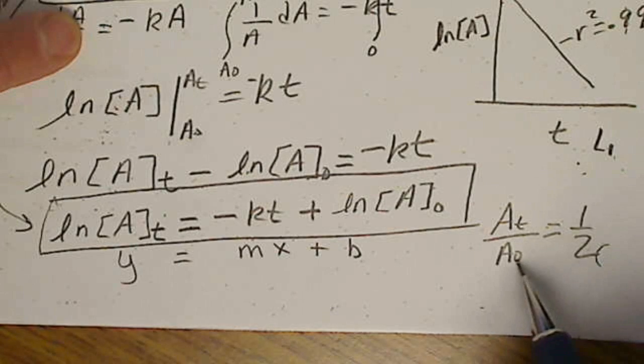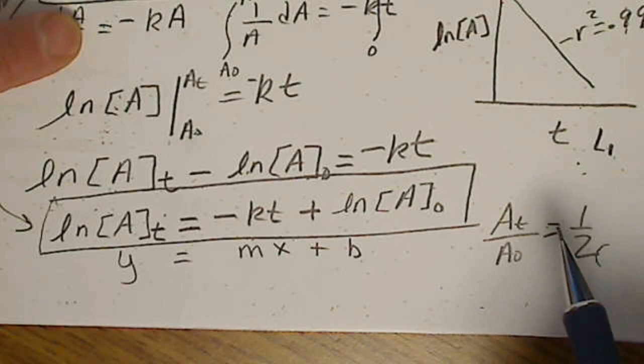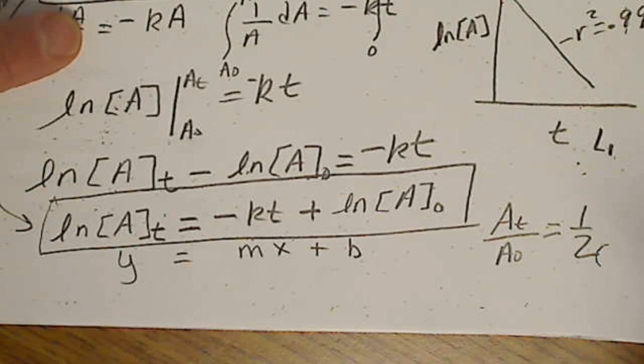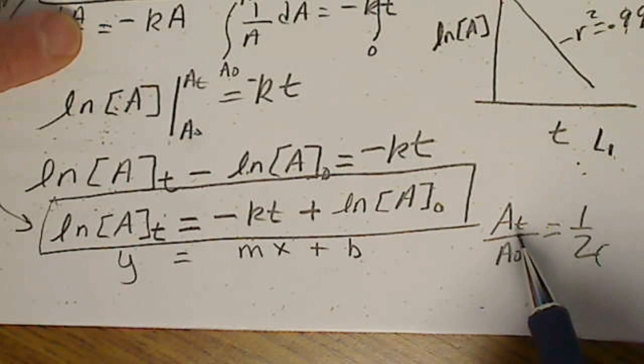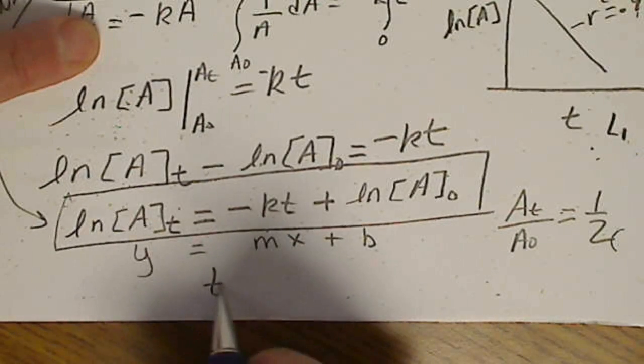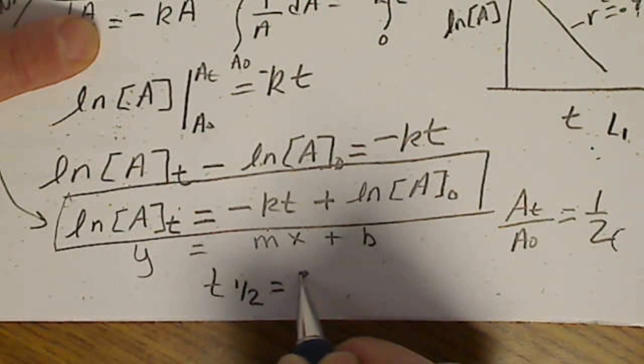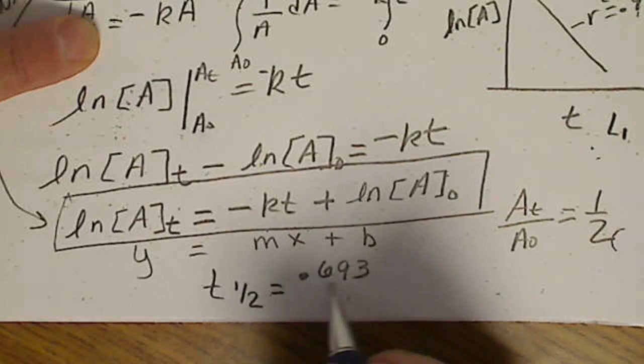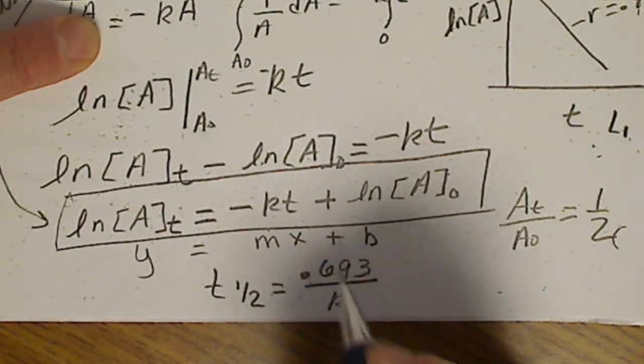When half of our initial concentration is gone. So we could plug this in, substitute those values, solve for T, and we would have the half-life equals 0.693 over the rate constant K.